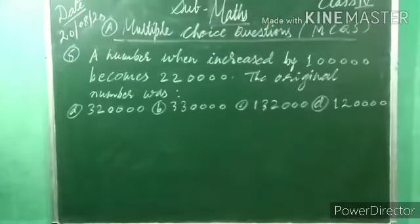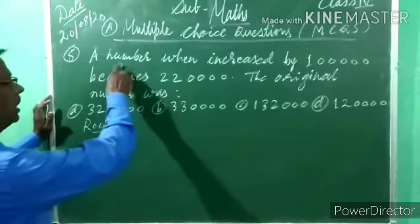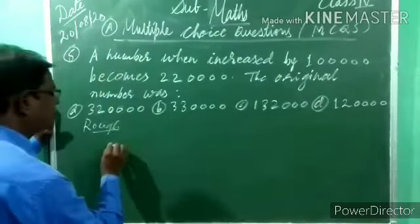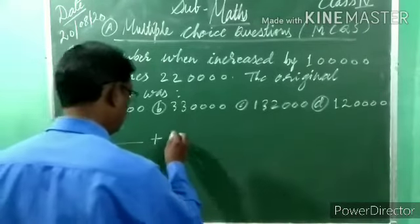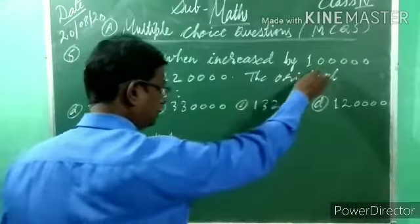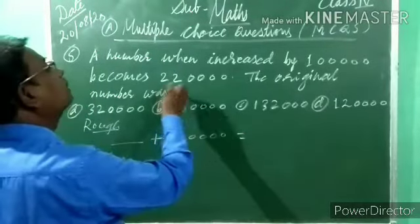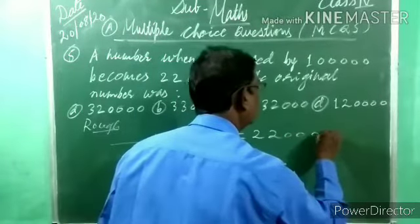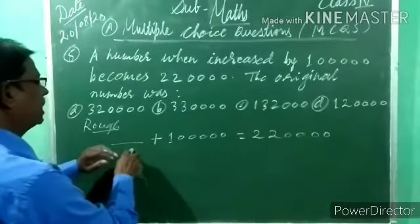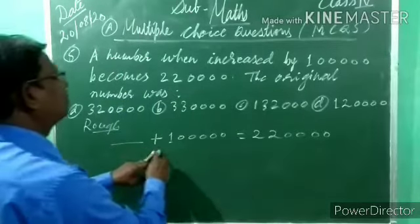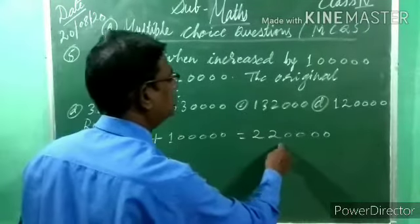A number — we don't know which number — when increased (plus) by one lakh, becomes (equals) two lakh twenty thousand. Let the unknown number be x. So: x + 1,00,000 = 2,20,000. We transfer one lakh to the right-hand side, and plus becomes minus.